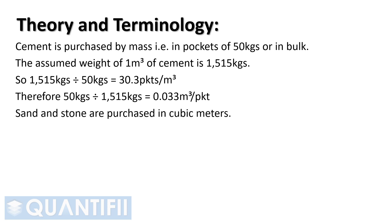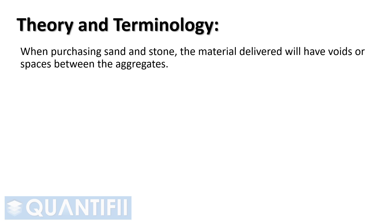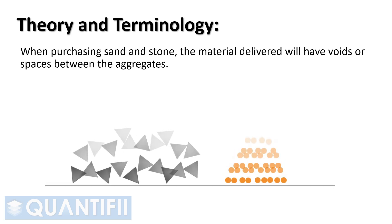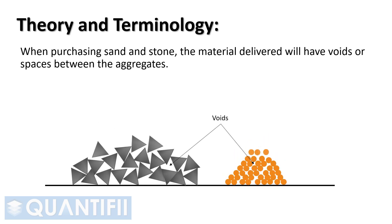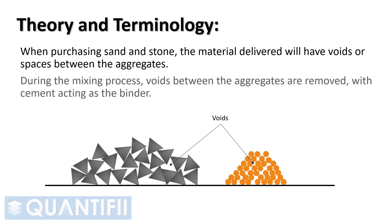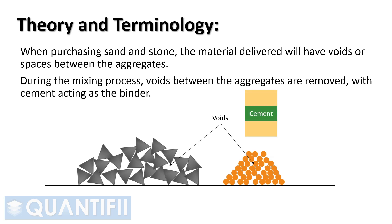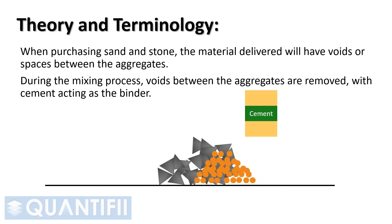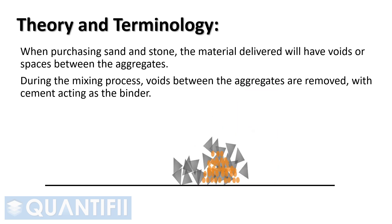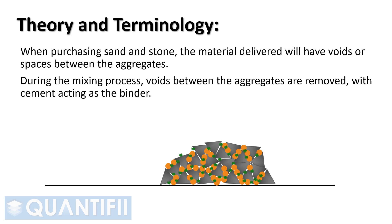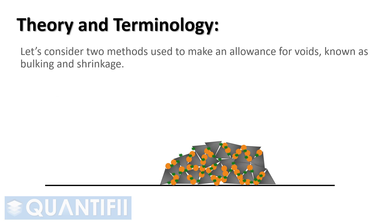Sand and stone are purchased in cubic meters. When purchasing sand and stone, the material delivered will have voids or spaces between the aggregates. During the mixing process, voids between the aggregates are removed, with cement acting as the binder. Let's consider two methods used to make an allowance for voids, known as bulking and shrinkage.